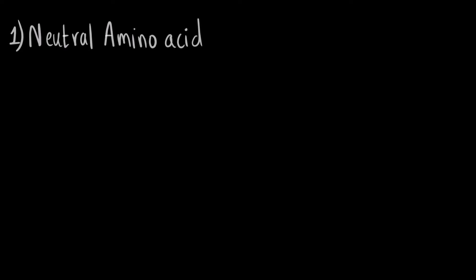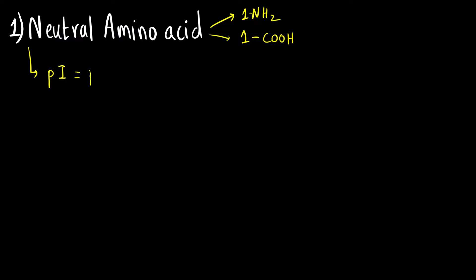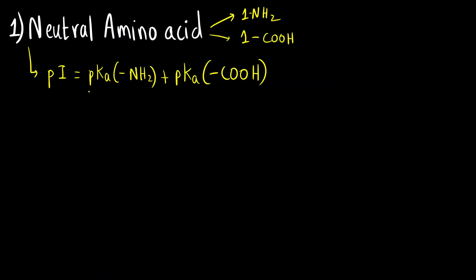Let us start with the simplest case: neutral amino acids. A neutral amino acid has one amine group and one carboxylic acid group in the overall structure. To calculate the isoelectric point for a neutral amino acid, you take the pKa of the amine group plus the pKa of the carboxylic acid group and take the average — that is, add both pKa values and divide by 2.